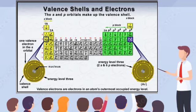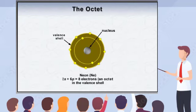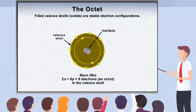Notice that the group number on the American version of the periodic table shows the number of valence electrons. The noble gases therefore contain eight valence electrons, which is known as an octet. The octet of electrons in the valence shell of the noble gases makes them the most stable elements in the periodic table.